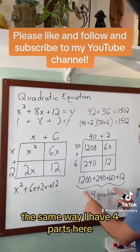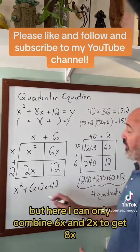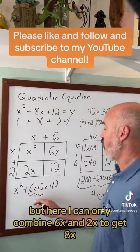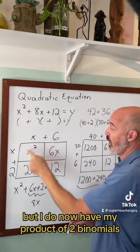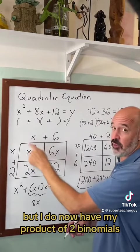The same way I have four parts here, I have four parts here. But here I can only combine 6x and 2x to get 8x. So I'm back to my original equation. But I do now have my product of two binomials.